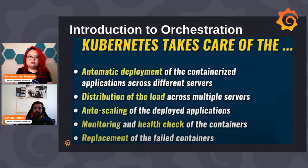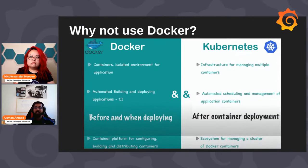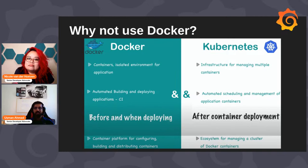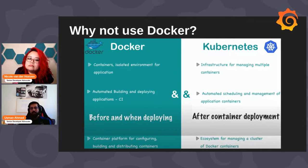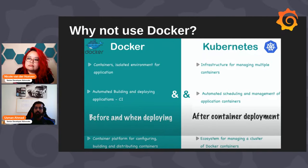This is something not very much included in Docker. Now let's look at the differences between Docker and Kubernetes. Docker uses containers for isolated environments per application, while in Kubernetes you have an infrastructure for maintaining multiple containers. Docker is used a lot for automated builds and deployments — the CI part — while Kubernetes is used for automated scheduling and management of your application containers in the production environment.